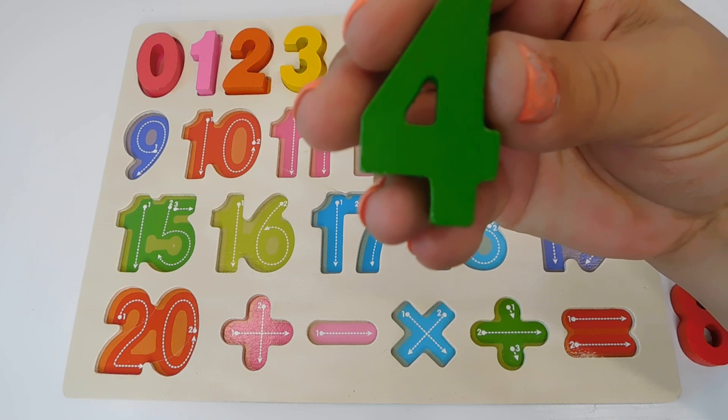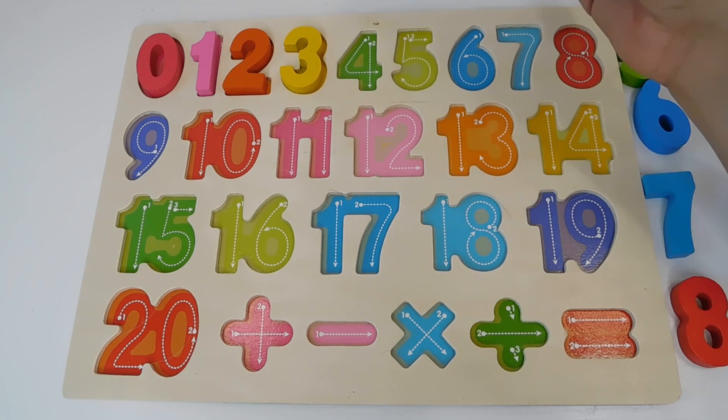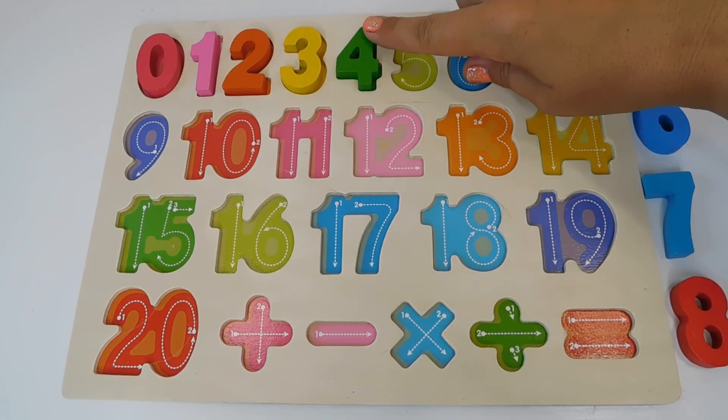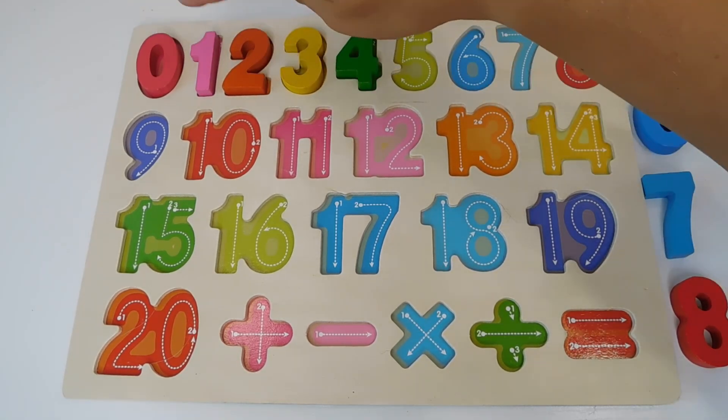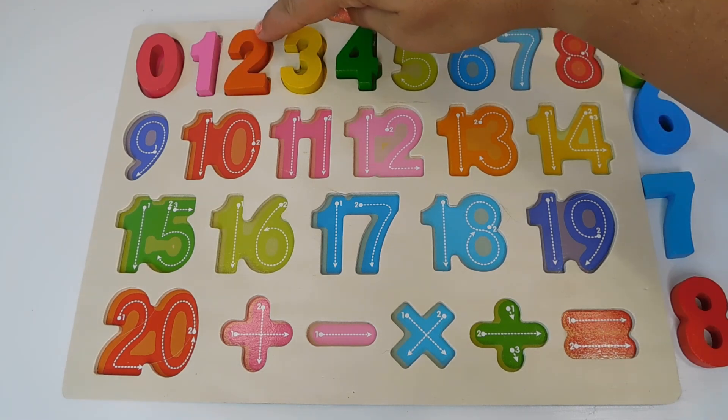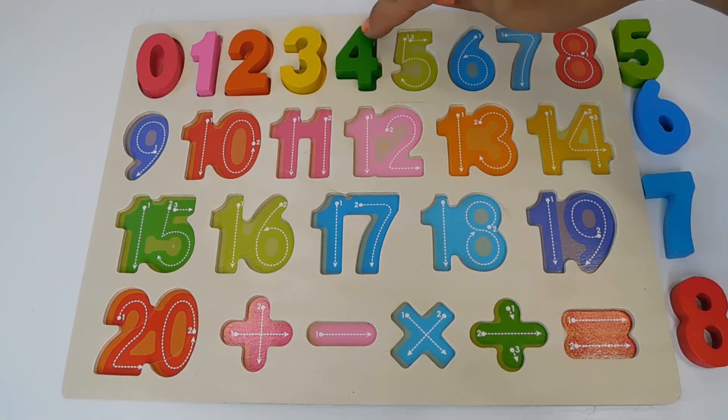Our next number is green and this is the number 4. Number 4. Green 4 goes here. We know 0, 1, 2, 3 and 4.